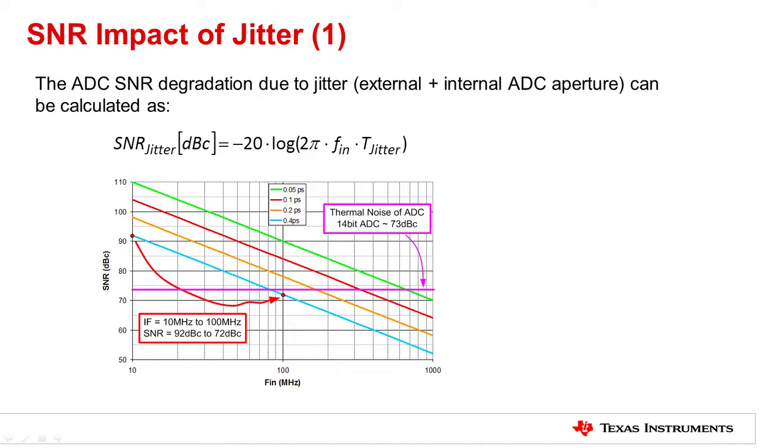There's a well-known formula that system designers use to estimate the noise degradation due to clock jitter. The SNR jitter degradation can be calculated as minus 20 times log of 2 pi times the input frequency times the jitter. As mentioned earlier, this formula also confirms that the SNR degradation due to jitter depends primarily on the input frequency and the amount of the jitter.